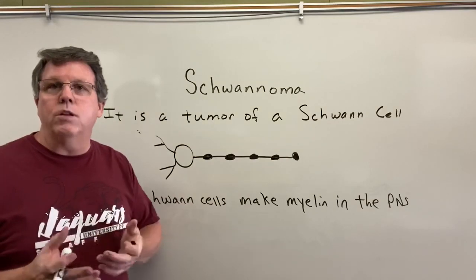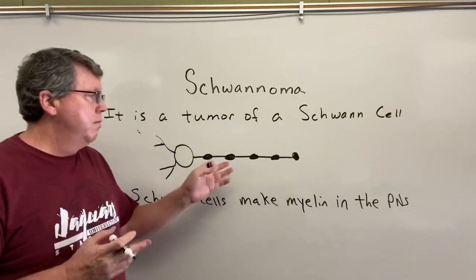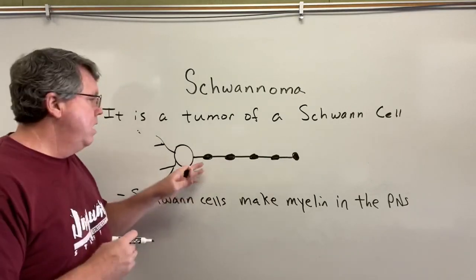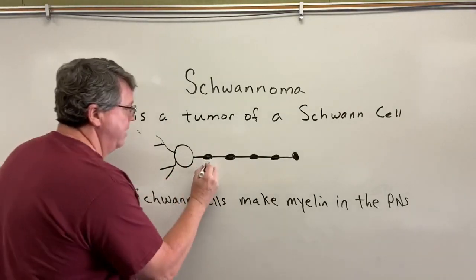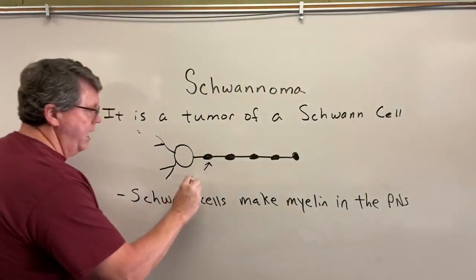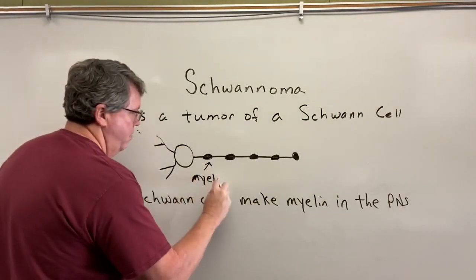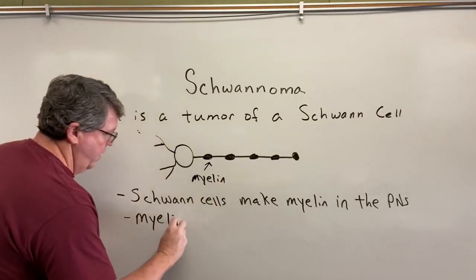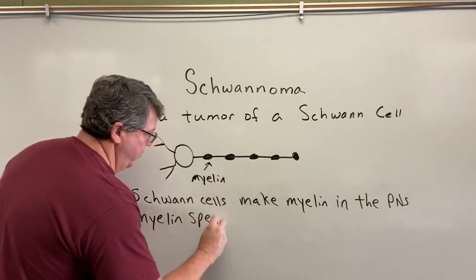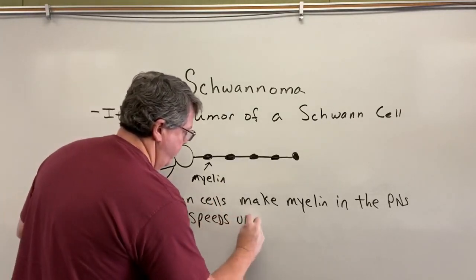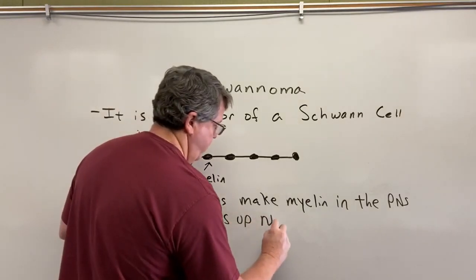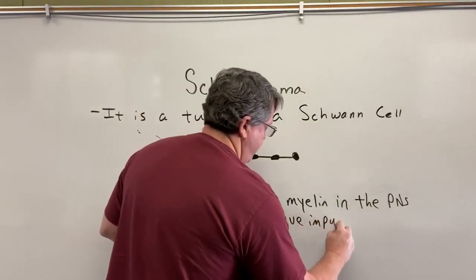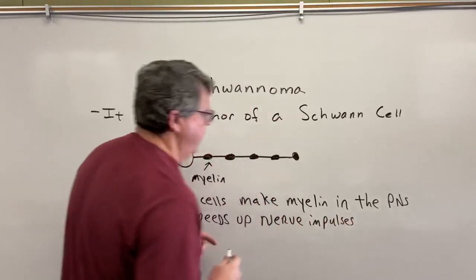In the central nervous system, it was oligodendrocytes that make myelin. So in the peripheral nervous system, it's going to be schwann cells. Myelin speeds up nerve impulses.